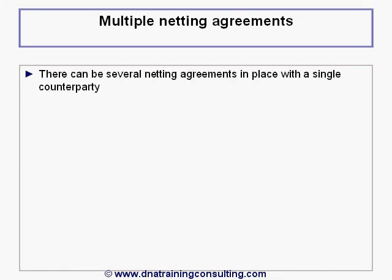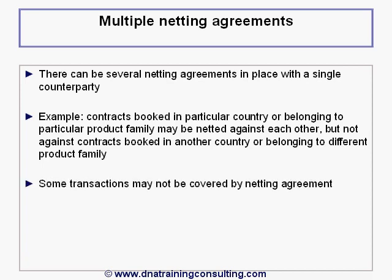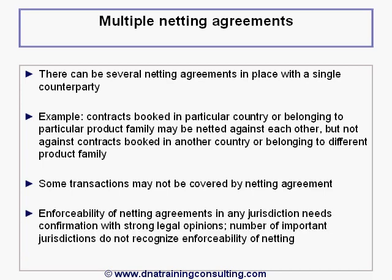There can be several netting agreements in place with a single counterparty. For example, it may be that contracts booked in a particular country, or belonging to a particular product family, may be netted against each other, but not against contracts booked in another country or belonging to a different product family. In addition, some transactions may not be covered by any netting agreement. The enforceability of a netting agreement in any jurisdiction needs confirmation with strong legal opinions. To this day, a number of important jurisdictions do not recognize fully the enforceability of netting.